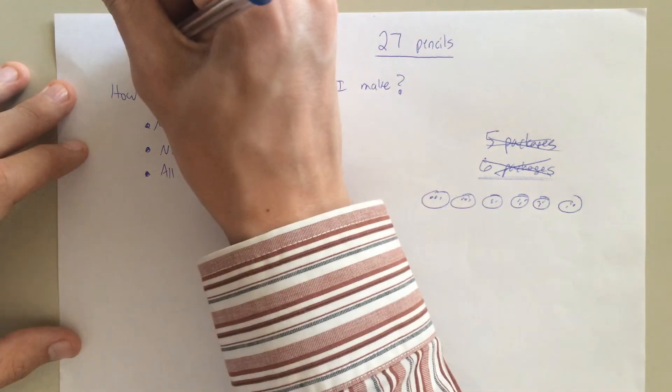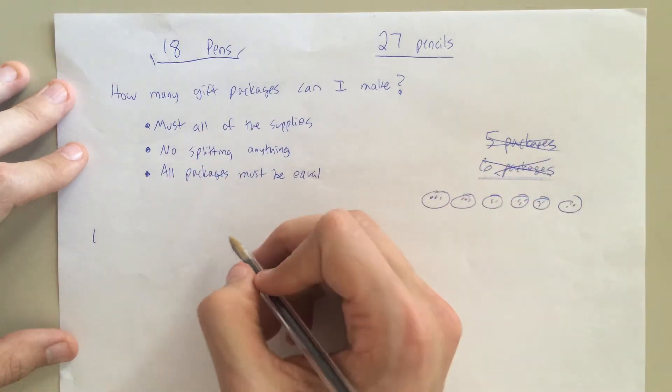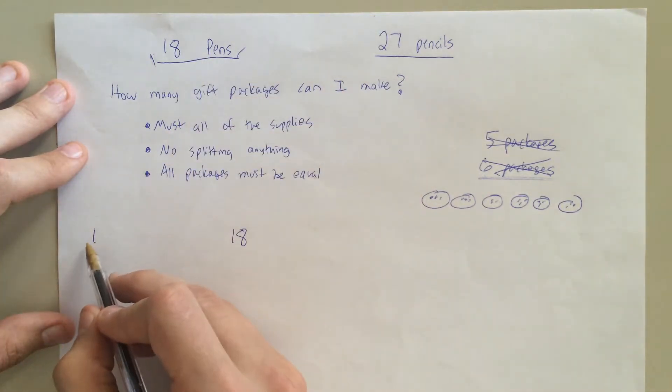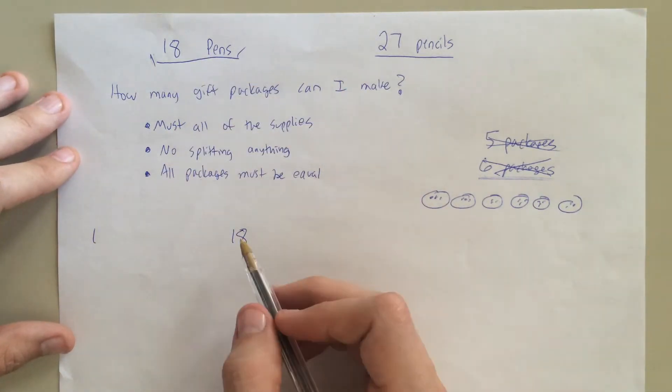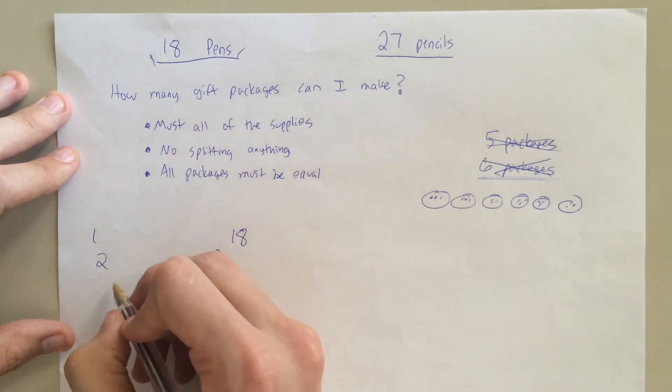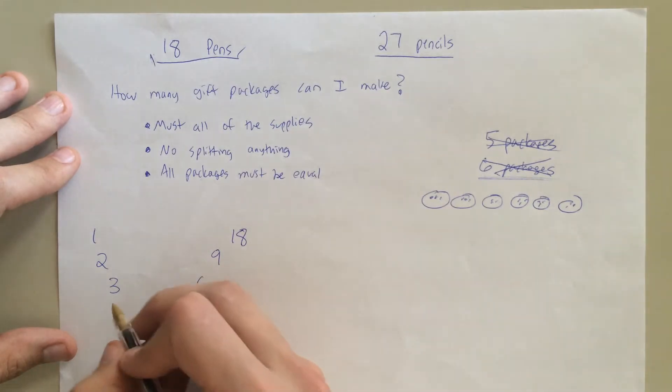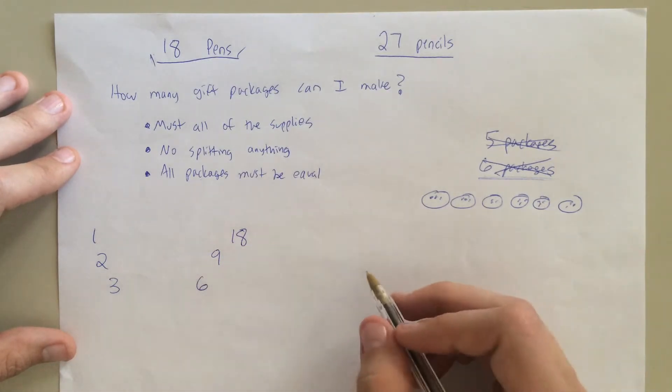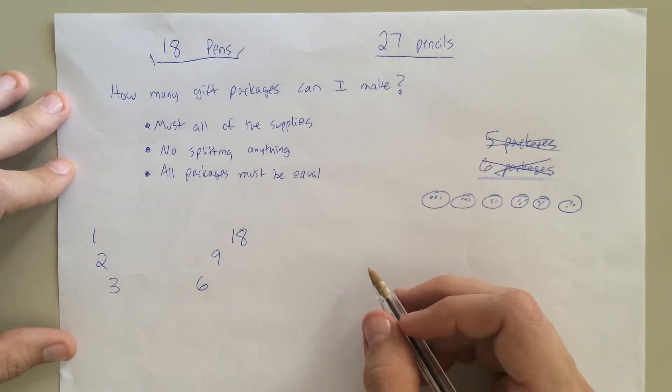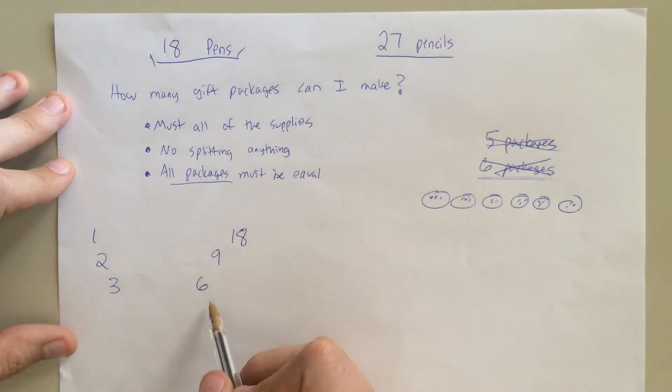So, let's look at just 18 pens. How can I possibly distribute the 18 pens evenly into a bunch of packages? So, I know I can put 18 pens into one package, and that means I can also put it into 18 packages. I could have one package of 18 pens, or 18 packages of one pen. I could have two packages, which means I can also have nine packages. I could have three packages, which means I could also have six. I think that's it. So, I think that's all the factors of 18. And so, I'm just thinking, how many packages can I distribute evenly these pens to? We found all the factors of 18, and these are all the ways I can distribute them.